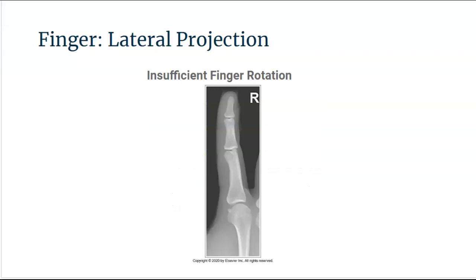For insufficient finger rotation in the lateral projection, the finger will present more like a PA projection with soft tissue nearly equal on both sides. I typically look at the metacarpal heads to determine rotation: if the digit being imaged appears anterior to the others, I know I am excessively rotated; if it appears posterior to the other digits, I know I am under-rotated. Look at all the anatomy as a whole.